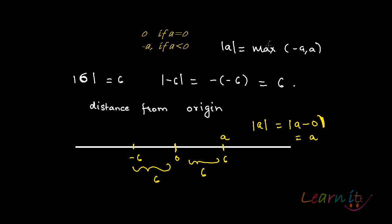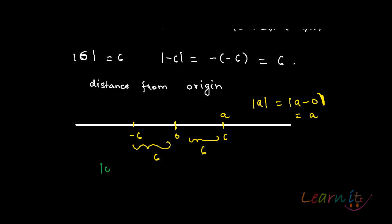It is also important to know what happens when we ask for the absolute value of 0. It is essentially the distance between 0 and 0, which is of course 0. So the absolute value of 0 is 0. Whether A is negative or positive, the distance will always be positive — and that is why whatever comes out of the absolute value sign is always positive.